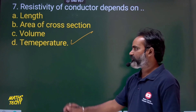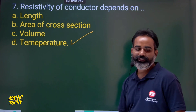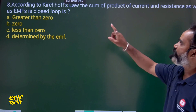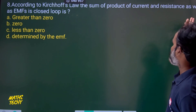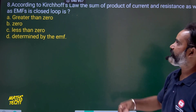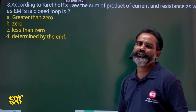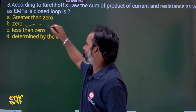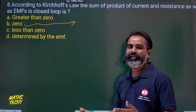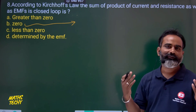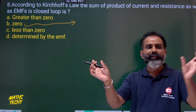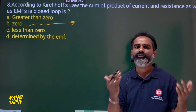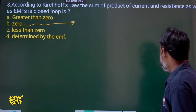Question 8: According to Kirchhoff's voltage law, the sum of the products of current and resistance along with the EMFs in a closed loop is equal to zero. This is a direct definition. Adding all IR drops and EMFs around the loop gives zero. Option B is the correct answer.